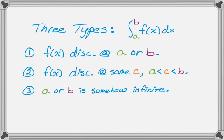And then in this video, we're going to deal with A or B being somehow infinite. So A could be negative infinity, B could be positive infinity, and then there is the absolute worst-case scenario, where you're doing a combination of these sorts of things.